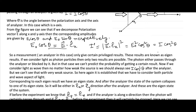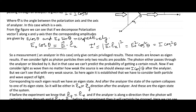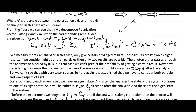A measurement — here the analyzer — only gives certain privileged results. What I mean by privileged result is that in an experiment, there must be some set of results and we get one of them. Those results are known as privileged results. In quantum mechanics, those results are also known as eigenresults. You will be familiar with these terms — eigenresults, eigenvalues — in future, or you may have already learned this in the context of matrices.